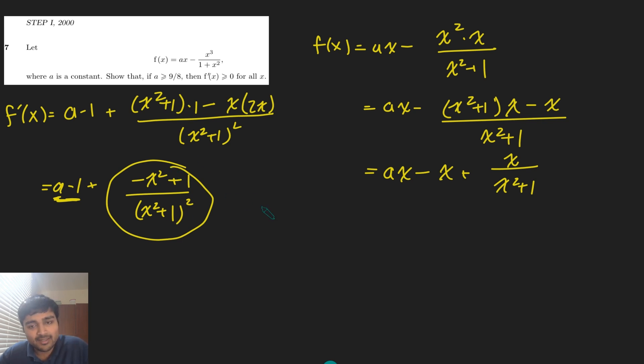So we can say that f'(x) is at least 0 if and only if this thing that we have here, let's assume that a equals 9 over 8. We want this thing here to be always at least negative an 8. So minus x squared plus 1 over x squared plus 1 squared, we need that to be at least a minus 8. Ok.